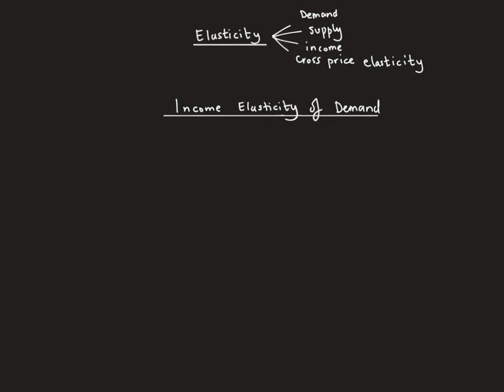In this video we'll focus on another type of elasticity: income elasticity of demand. In my previous videos we've already gone through elasticity of demand and cross price elasticity of demand. In this video we'll focus on income elasticity of demand, which measures the change in quantity demanded over the percentage change in income.